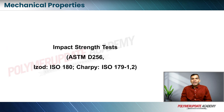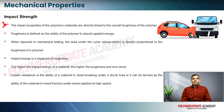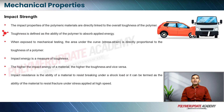Impact strength testing in the ASTM standard is carried out as per ASTM D256. The impact properties of polymeric materials are directly linked to the overall toughness of the polymer. When we say a polymer is tough, it means it has very good impact resistance. Toughness is defined as the ability of the polymer to absorb applied energy.